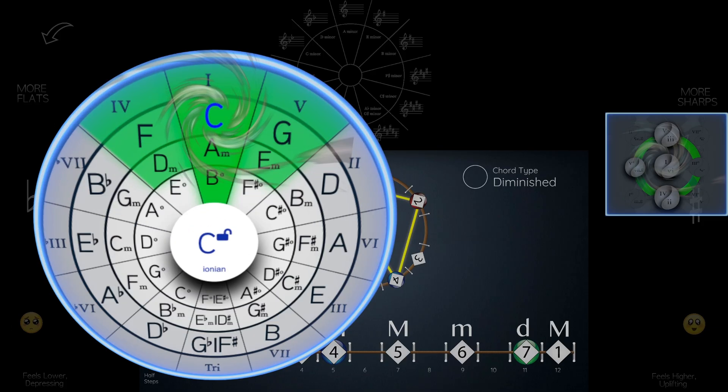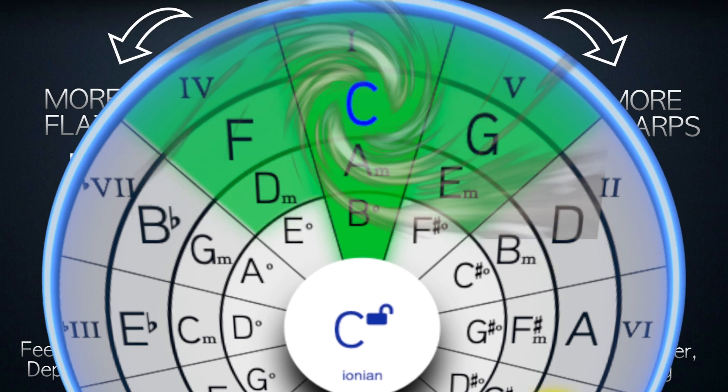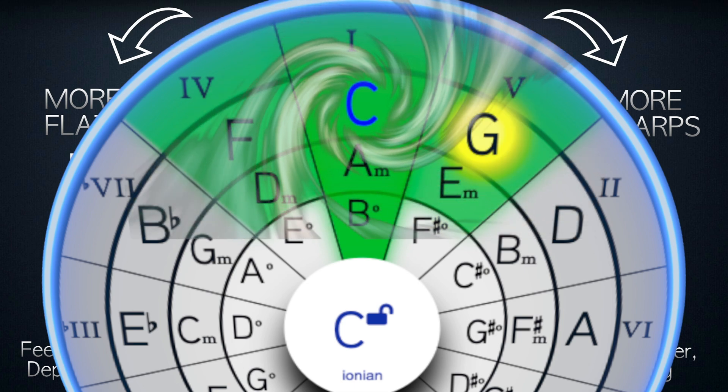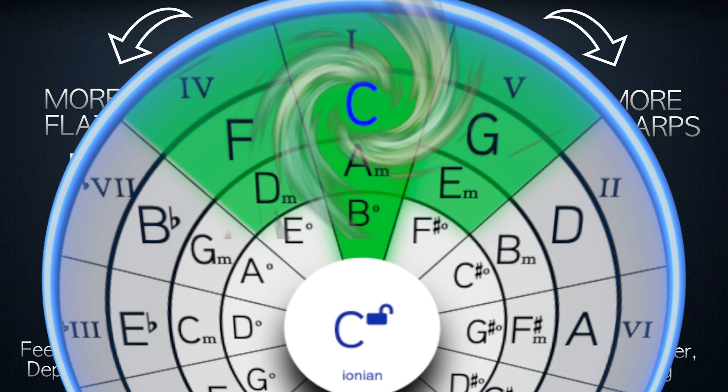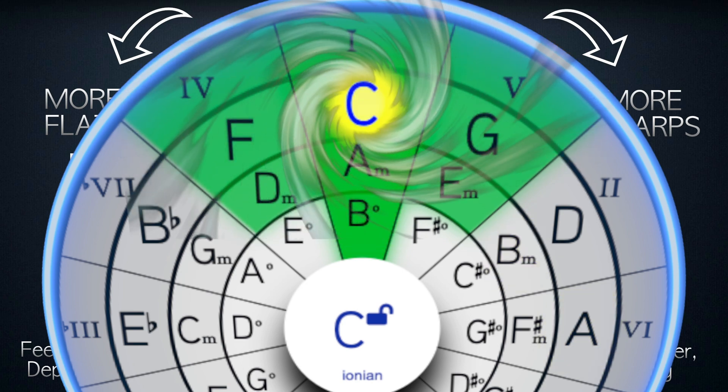And when we go to our circle of fifths, you'll see what? C major, D minor, E minor, F major, G number five is major, A minor, and B diminished. Makes sense.